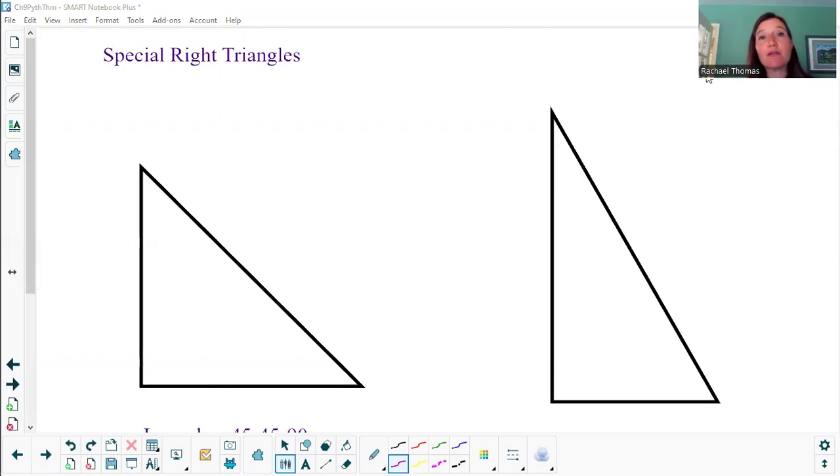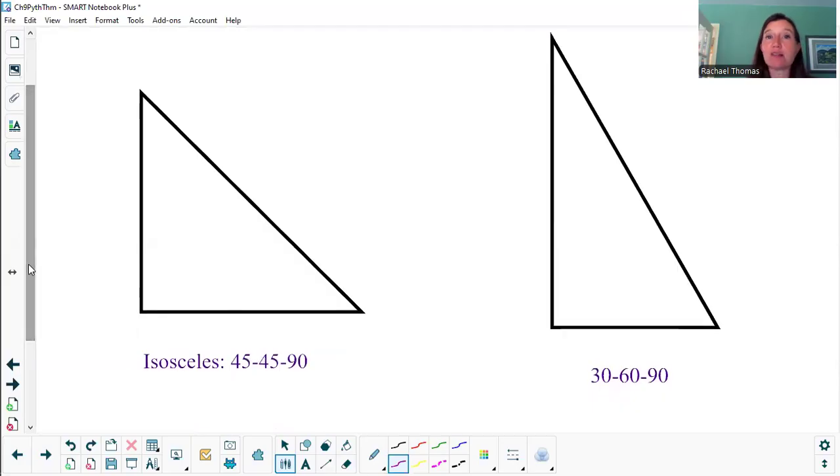Hi friends! Today on One Minute Math, we're going to give you the full-length explanation of special right triangles, which you might also call 45-45-90 triangles or 30-60-90 right triangles.